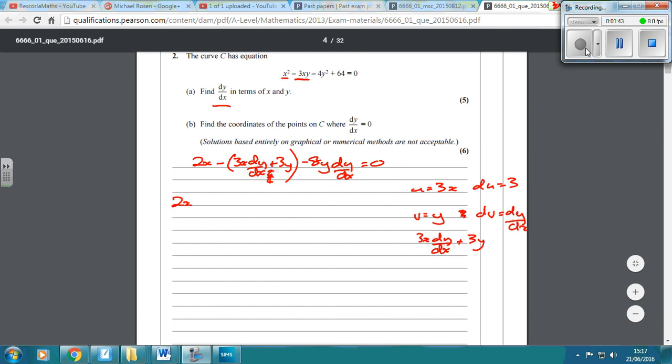So if we write that out again, that's going to be 2x minus 3x dy by dx, I almost made a mistake myself, minus 3y, minus 8y dy by dx equals 0. Now, what you then do, so that's the implicit differentiation stuff, but if you want to get what dy by dx is, we need to get every dy by dx on one side, and leave everything else on the other side.